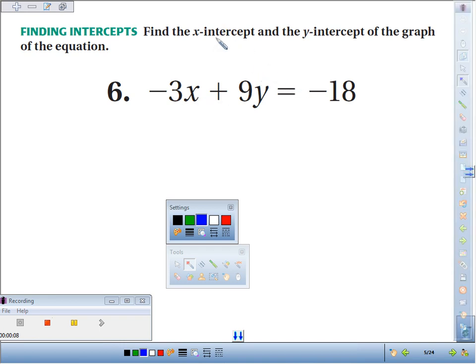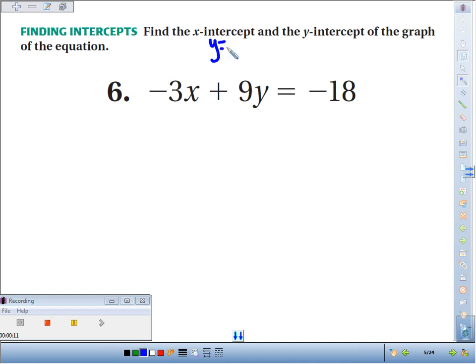The key here is that when you're locating your x-intercept, you set y equal to 0, and when you want your y-intercept, you set x equal to 0.